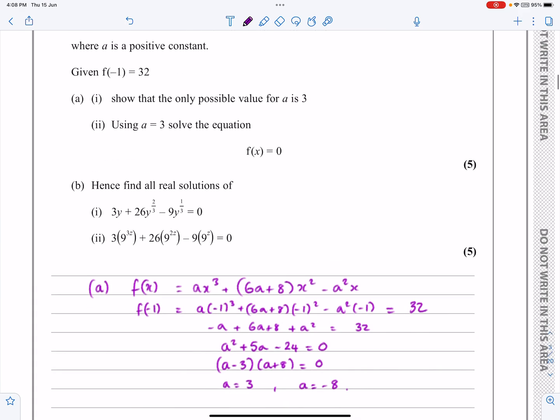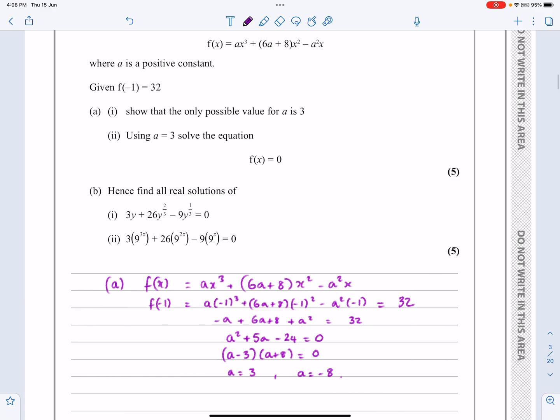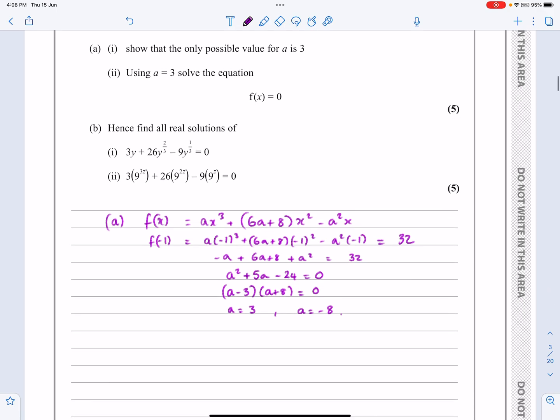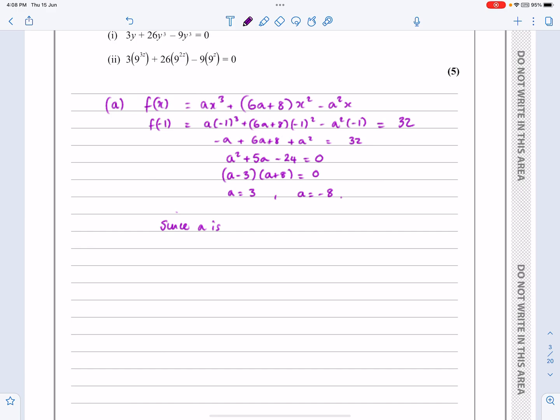Let's go back and have a better look at the question. It says show that the only possible value for a is 3. Well, remember a is a positive constant. So if a is positive, a must just be equal to 3. Perhaps just to make that really clear, perhaps you say, since a is positive, a equals 3, so it's clear that we're not considering the minus 8 one.